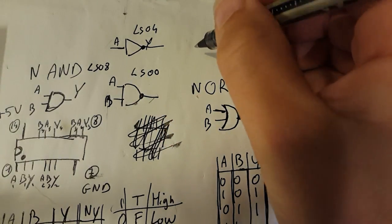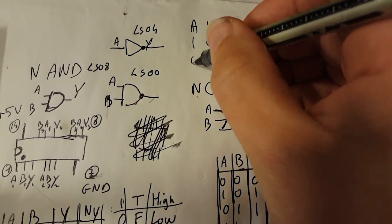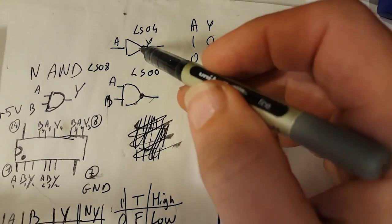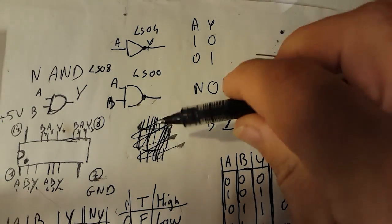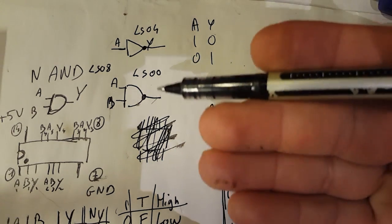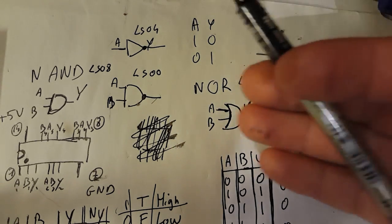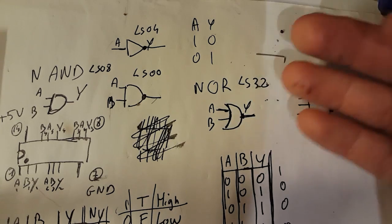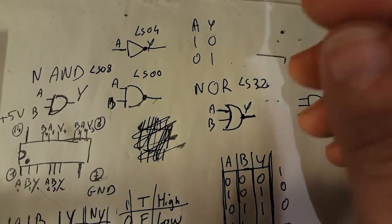The X inverter takes input A and inverts it, so if A is one the output is zero and vice versa. That's actually used in the Game Boy screen modification — you put a 90-degree screen filter and add the X inverter to invert the output from the chip into the screen, resulting in highs being lows and lows being highs, which makes the colors pop out.